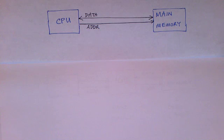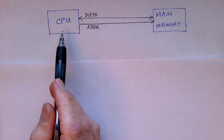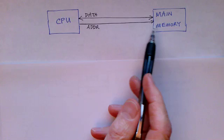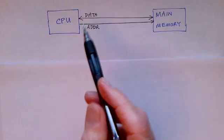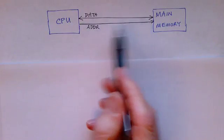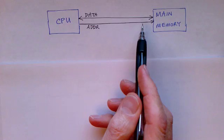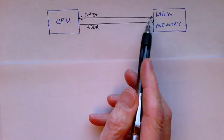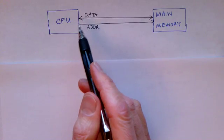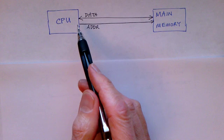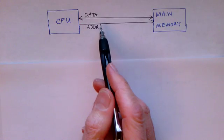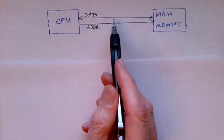Here is the basic block diagram for any computer. On the left-hand side you see the central processing unit, and over here you see the main memory. From time to time, the CPU needs data out of the memory, so it sends an address to the main memory and the memory sends the data back. Periodically, the CPU will want to update memory — it will do writes to memory as well as reads. When it does a write, it will send an address to the main memory as well as data.